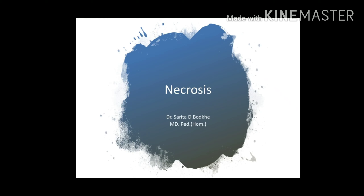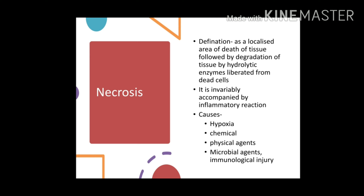Today's topic is necrosis. Necrosis is nothing but irreversible cell injury. Irreversible cell injury may be necrosis or may be apoptosis — apoptosis we will see later. Necrosis is a localized area of death of tissue, followed by degeneration of tissue by hydrolytic enzymes liberated from the dead cell. These changes, along with some inflammatory reaction, are called necrosis.